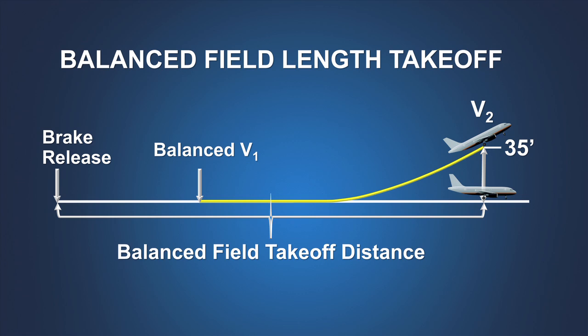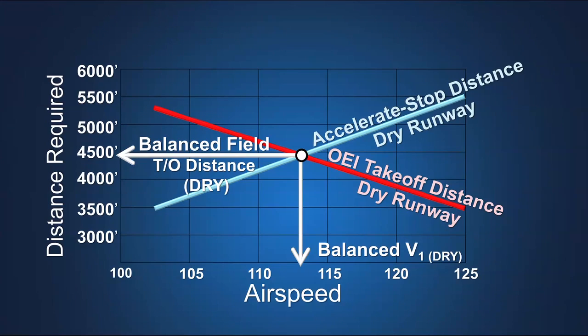Typically, the minimum field length required for takeoff in a two-engine turbojet transport category airplane is based on the balanced field length concept, where the accelerate stop distance is equal to the one engine inoperative takeoff distance. The balanced field length can be obtained when, for a given takeoff weight, a V1 speed is selected such that these two distances are equal.